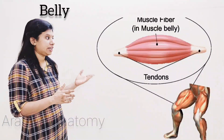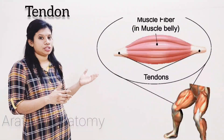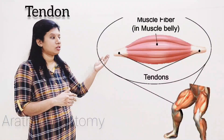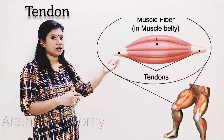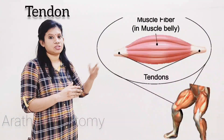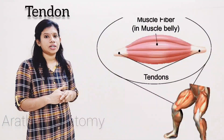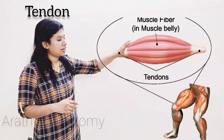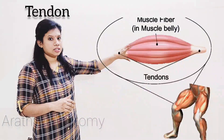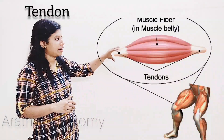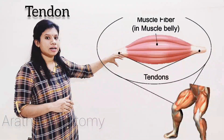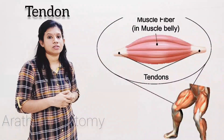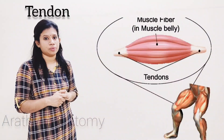And tendon — what is tendon? Tendon means these are fibrous, non-contractive, cord-like structures. In the diagram, you can see the belly which is fleshy and contracted in the center. The fibrous, non-contractive, cord-like structure on either side of the belly is called as tendon.